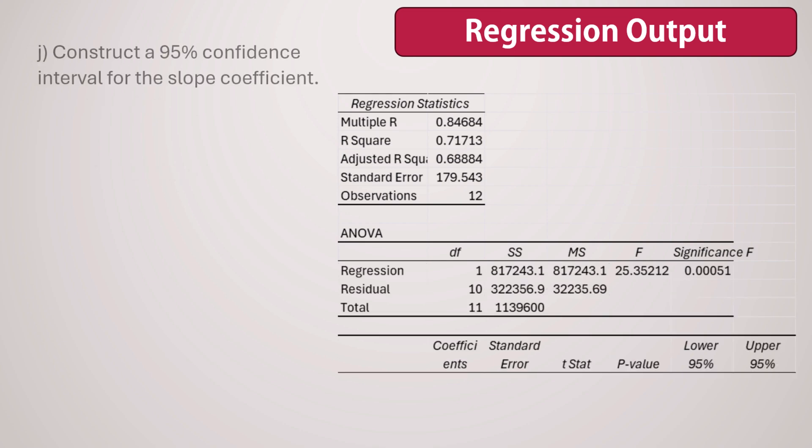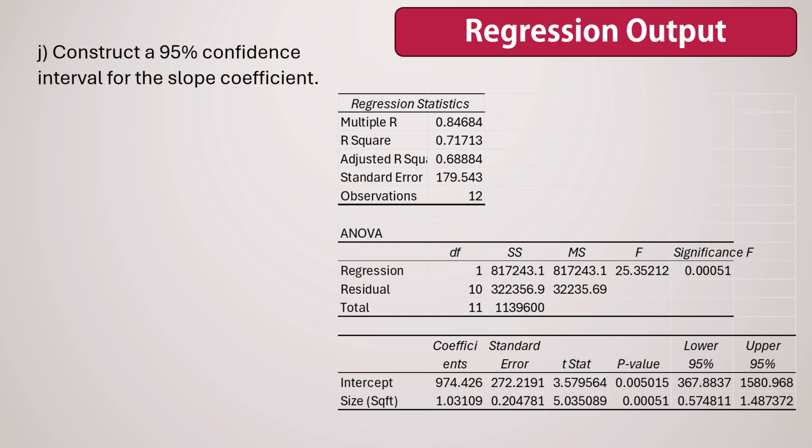Next, we construct a 95% confidence interval for the slope coefficient. We can use this formula to determine the lower and upper limits of the confidence interval, where B1 is the sample slope here, t is the t critical value with n-2 degrees of freedom, not the t stat shown here. SEB1 is the standard error of the slope given here in the output, which can also be calculated using this formula. Moreover, we can find the lower and upper limits of the confidence interval directly in our regression output here.